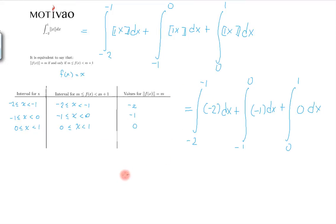Now what is this equal to? Well, the integral of a constant is just x. So this is minus 2x evaluated from minus 2 to minus 1 plus negative 1x evaluated from minus 1 to 0 plus 0x evaluated from 0 to 1. Now, of course, the integral of 0 is 0 because once you multiply by 0, it becomes 0. So we can ignore this term.